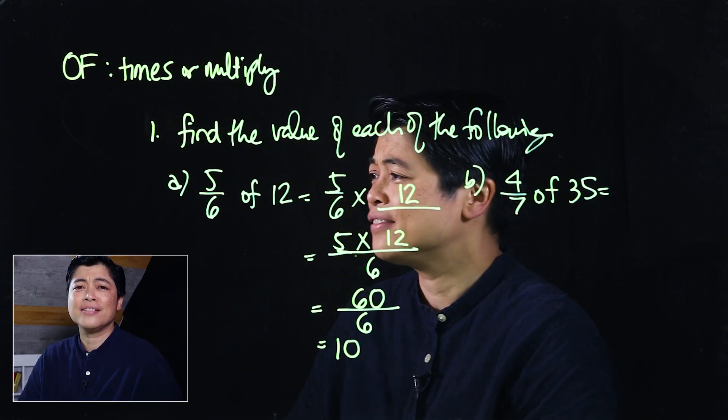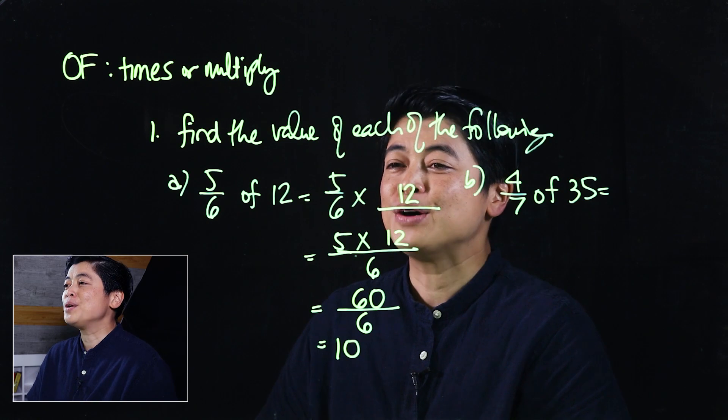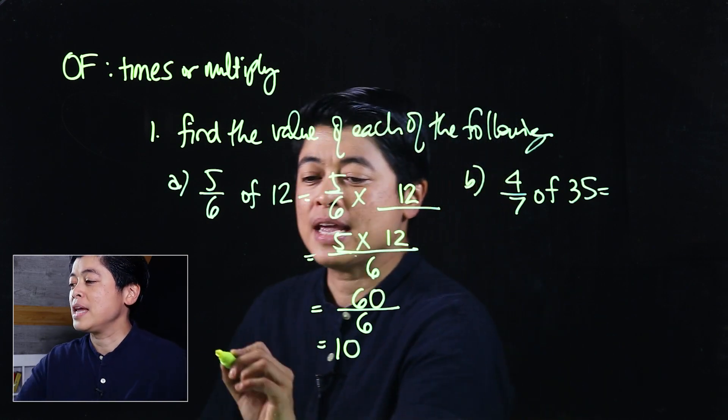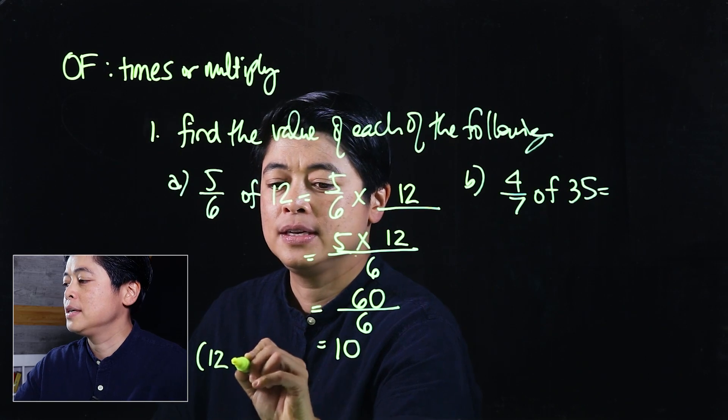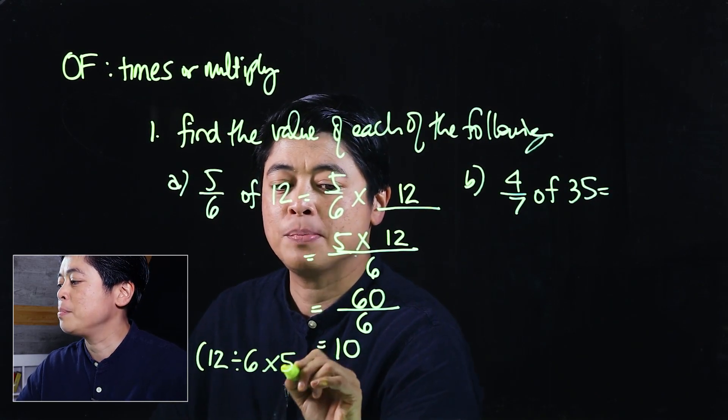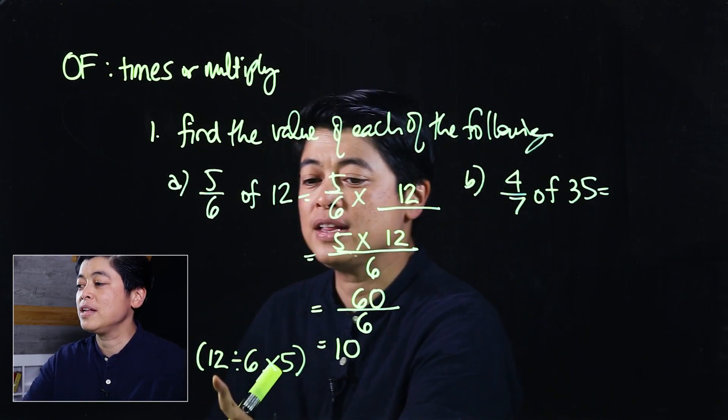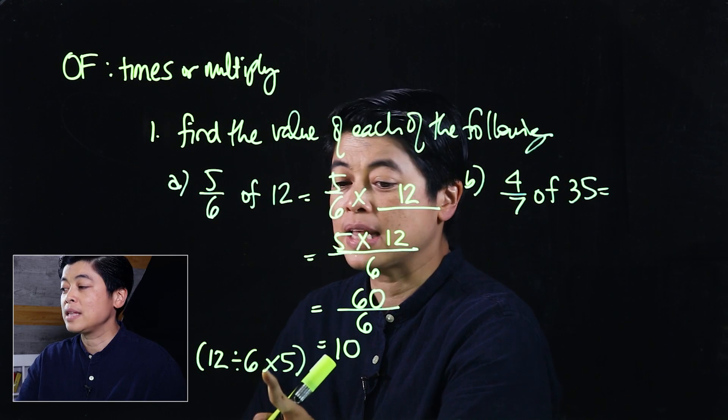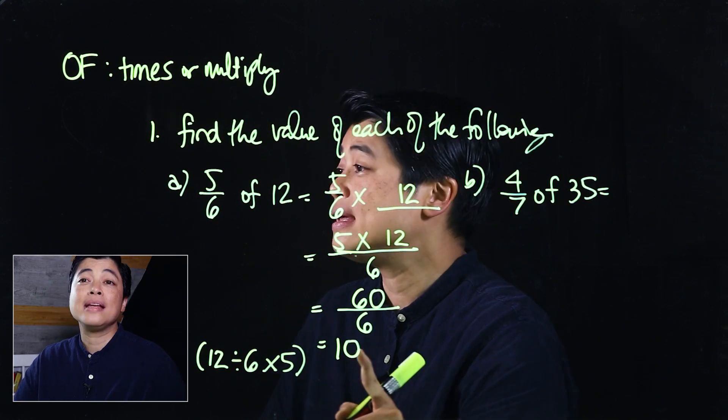That's kind of a tedious process, so my process for this from last year was to take 12 divided by 6 and then times by 5. So if we take 12 divided by 6, that would be 2 times 5, that will be 10.